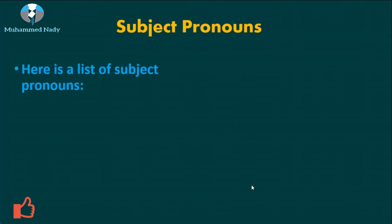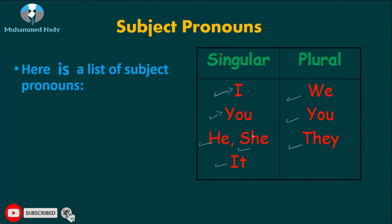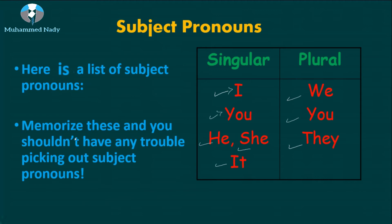Here is a list of the subject pronouns. For singular, we use I, you, he, she, or it. For plural, we use we, you, and they. It's very important to know whether it's singular or plural because you need subject-verb agreement in your sentence. There is a video linked above that explains subject-verb agreement. Memorize these subject pronouns — if you don't memorize them, it's very difficult to identify them.